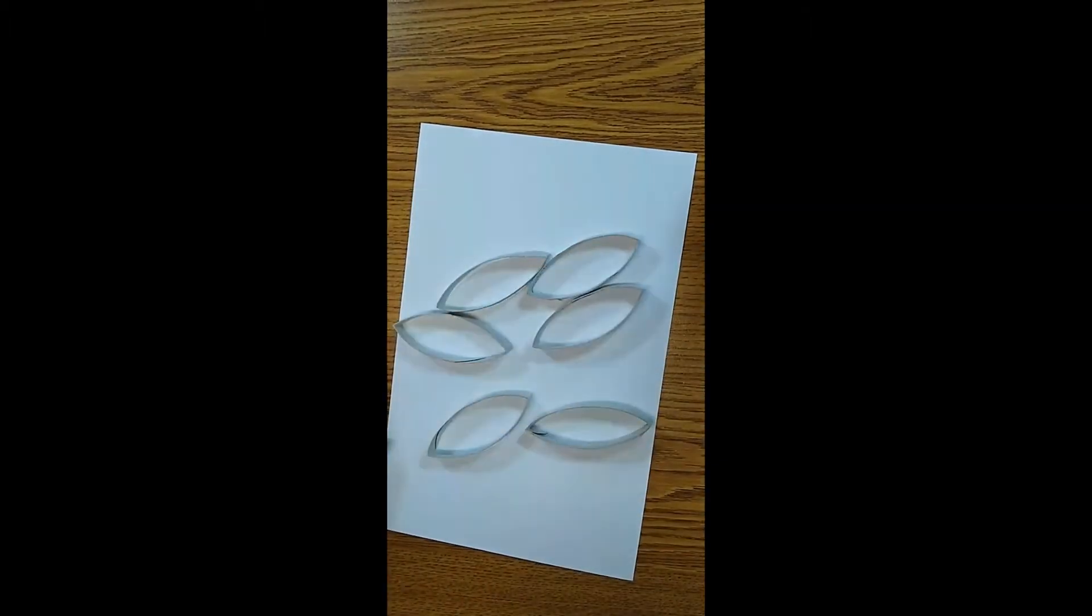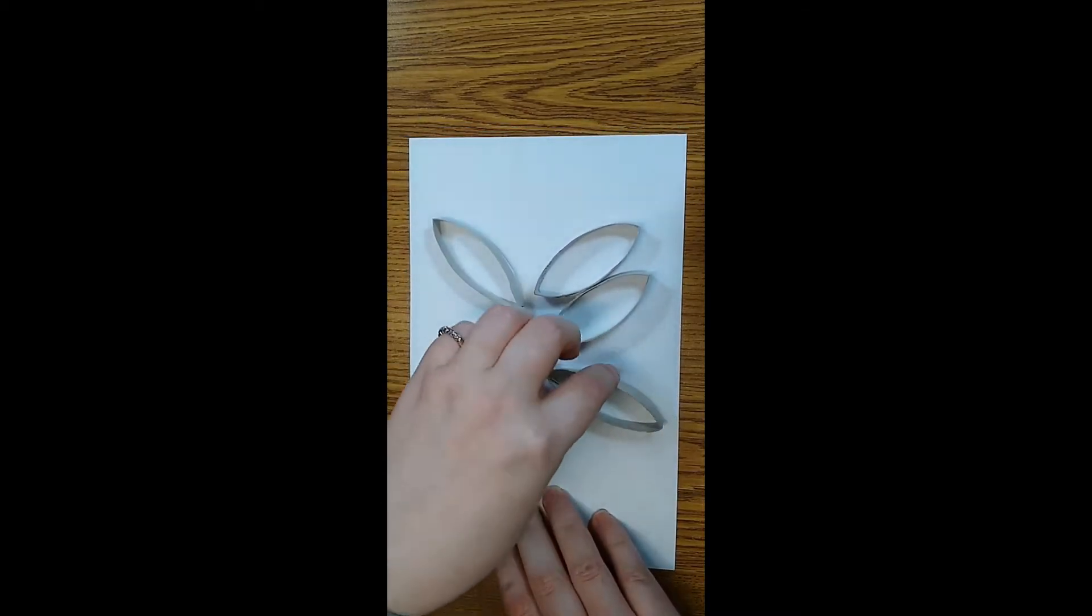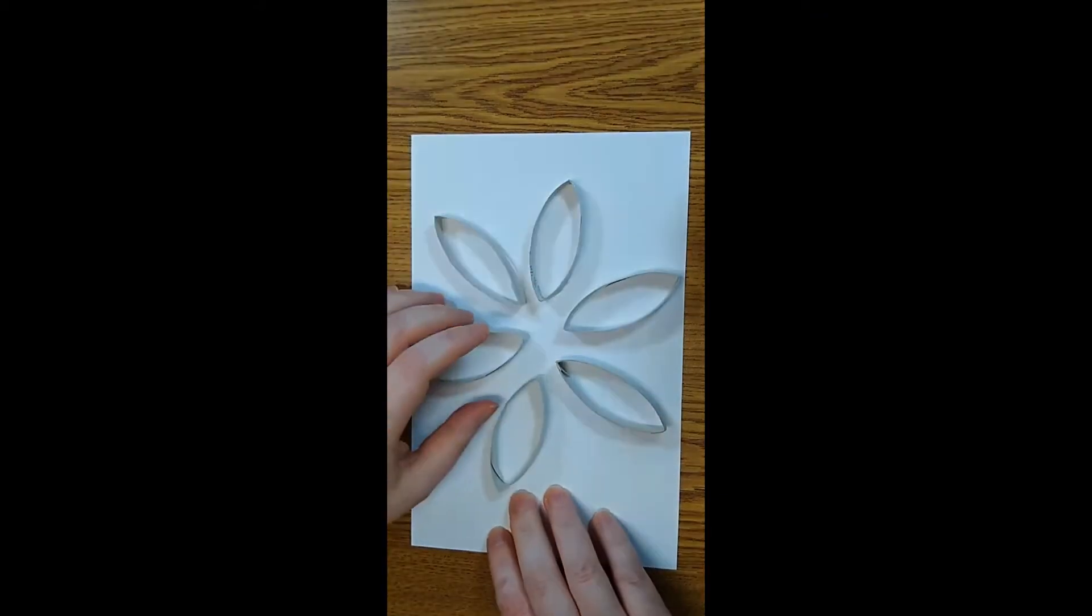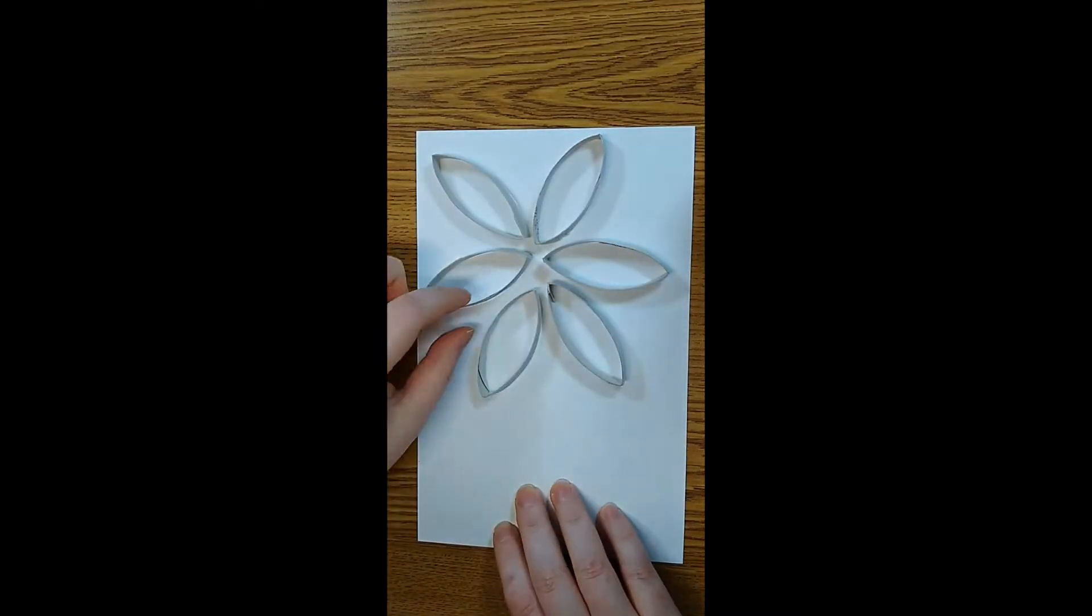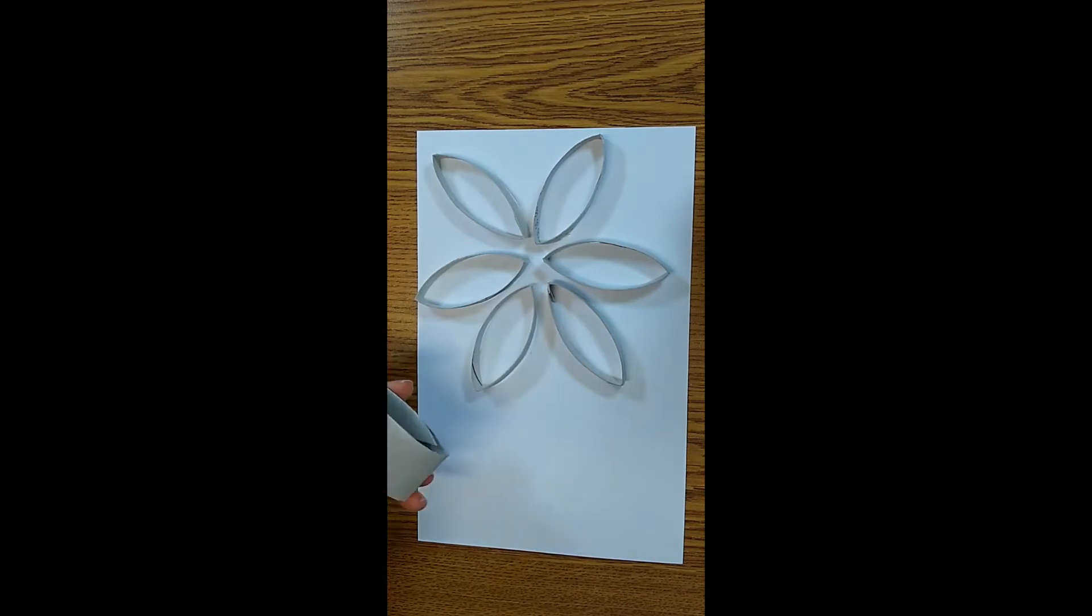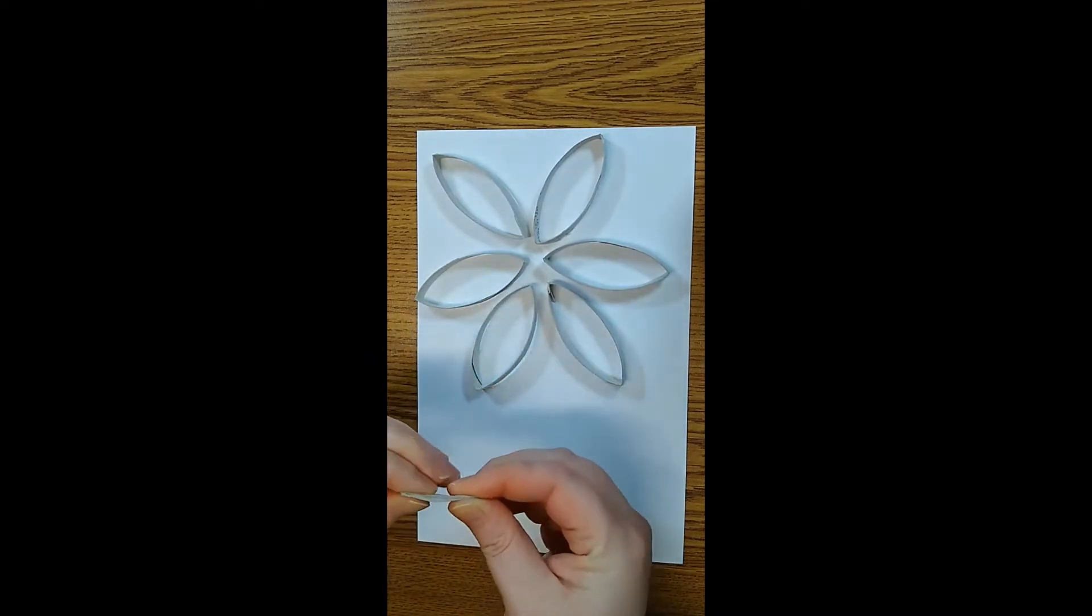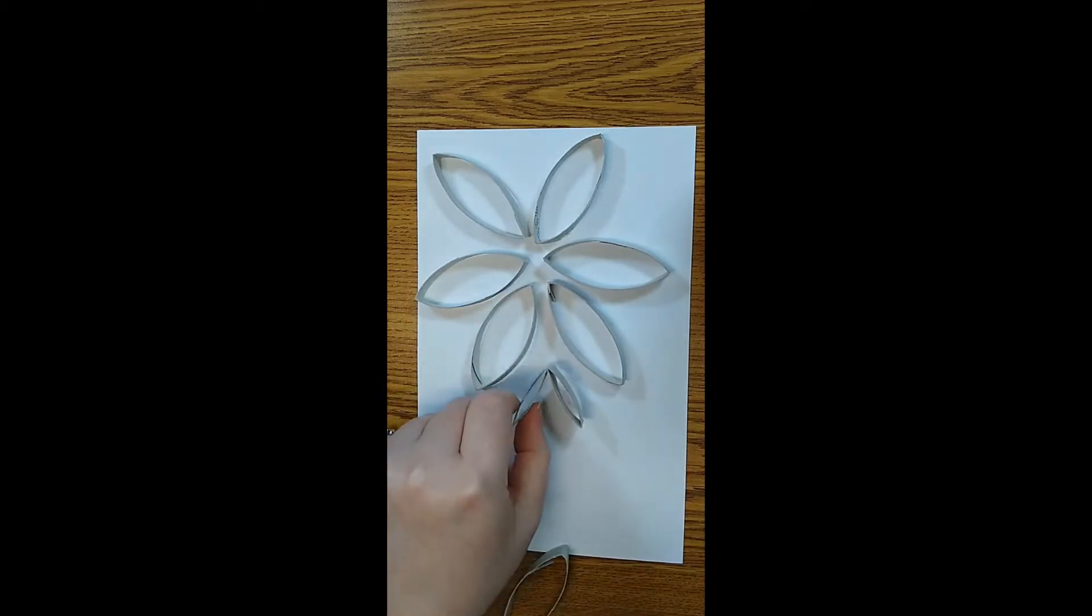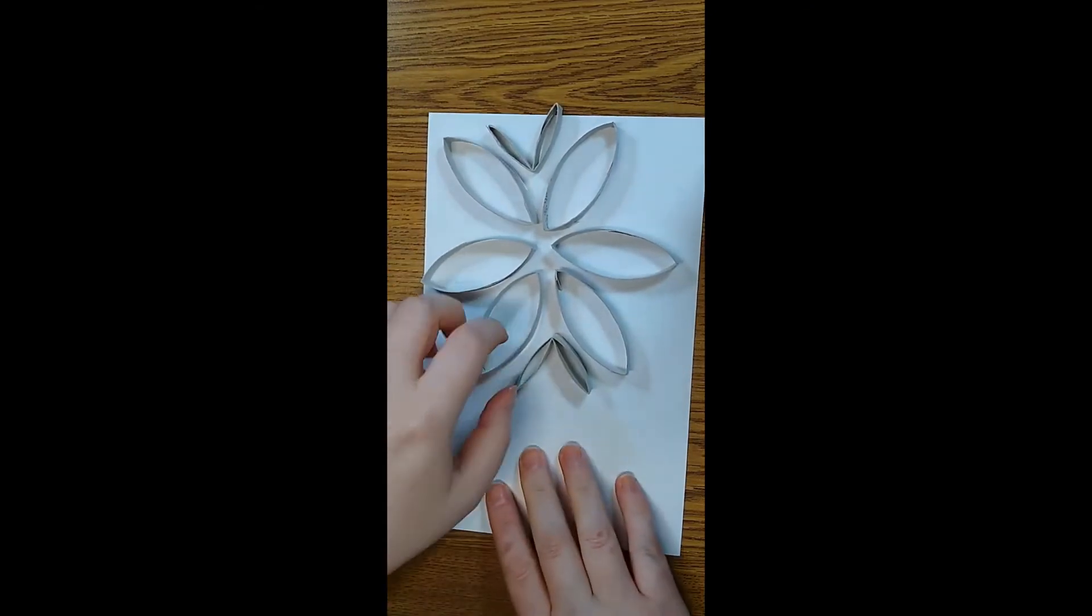So I've got six pieces here - that's the least amount that you're going to need. You're going to take your pieces and arrange them on your paper however you like to get that snowflake shape. With the other pieces that you can cut, you can fold those or cut them in half however you want to add a little extra decoration.